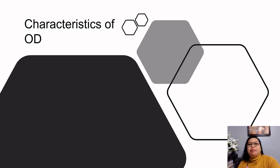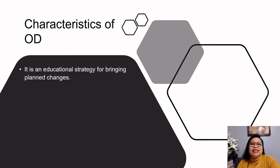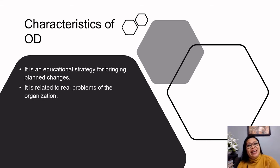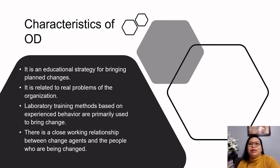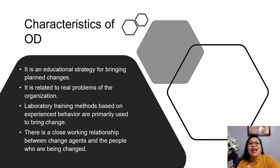According to Warren Bennis, a prolific author on OD, OD has the following characteristics. It is an educational strategy for bringing planned changes. It is related to real problems of the organization. Laboratory training methods based on experienced behavior are primarily used to bring change. There is a close working relationship between change agents and the people who are being changed. The relationships involve mutual trust, joint goals and means, and mutual influence.